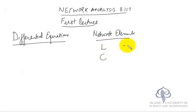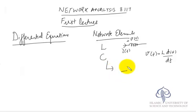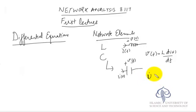For example, in the case of inductance, we can write the voltage drop across the inductance and relate it to the current flowing through the inductance through the differential equation: V(t) = L · di(t)/dt. Similarly, for the capacitance, we can relate the voltage across the capacitance and the current through the capacitance by the relationship: I(t) = C · dV(t)/dt.